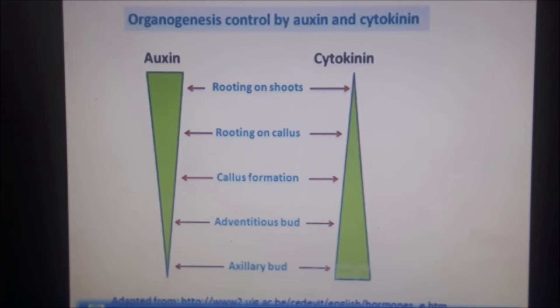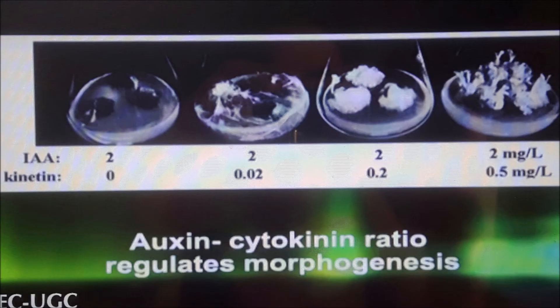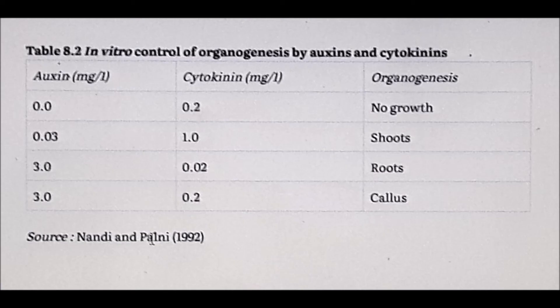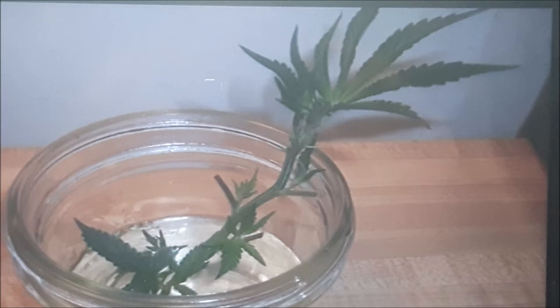You have to get the right amount of hormones right, because high amounts of auxin produce roots and high amounts of cytokinins produce shoots. Here are some formulas for you to play around with — you can see auxin at the top and kinetin is the cytokinin.